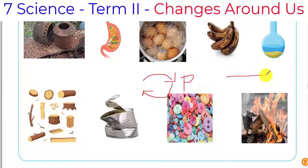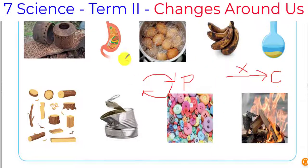When the reaction goes only one way and cannot be reversed back, that is said to be a chemical change.